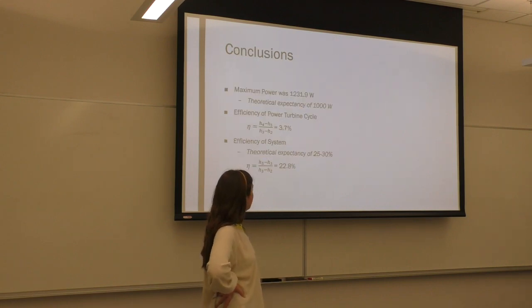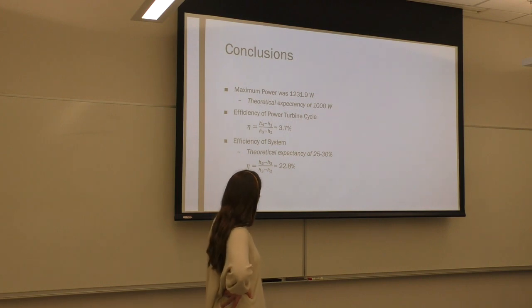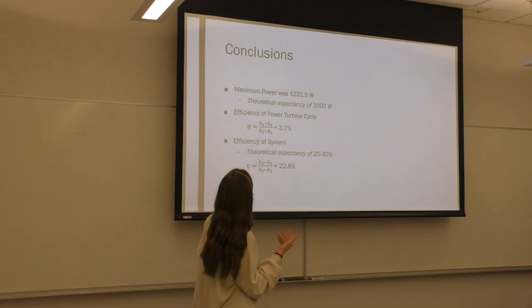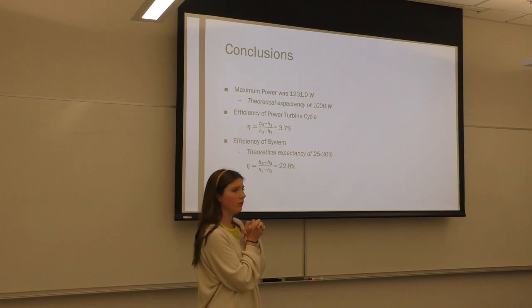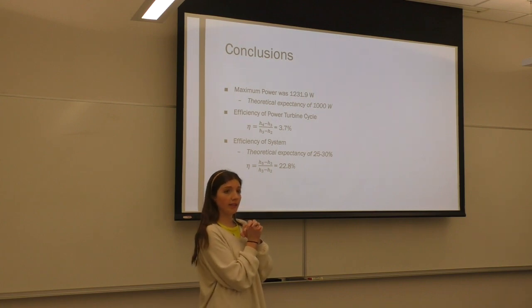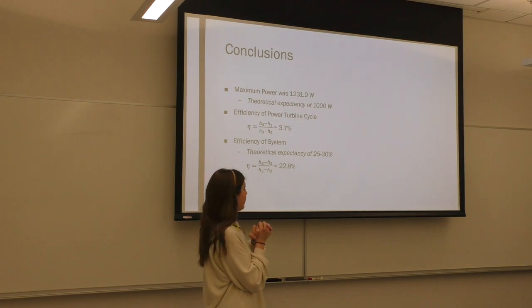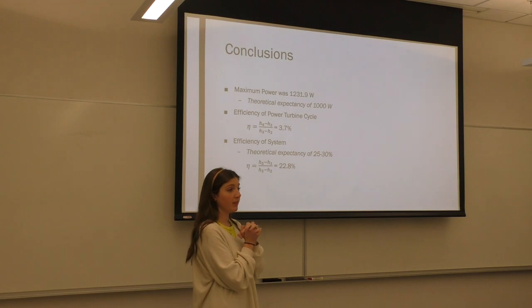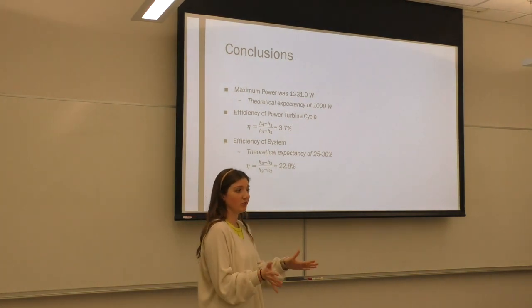And in conclusion, the maximum power was 1200. And theoretically it was, the maximum was about 1000. So it was pretty close. And then the efficiency of the power turbine cycle, which was driving the compressor. It was 3.7, which I'm not, I didn't find what the theoretical expectation was. But then the efficiency of the whole system was 22.8, which was close to what we were expecting. So overall, I was pretty proud of this experiment. It is possible to do it on the first try. I know you don't have any women in your group. So good luck.